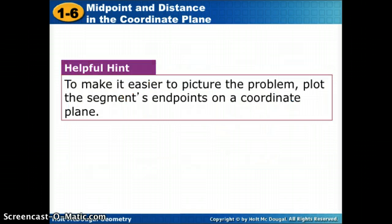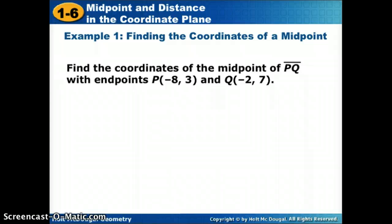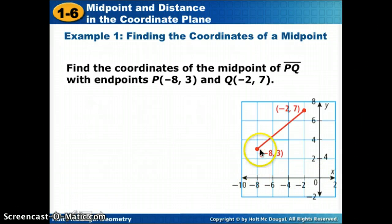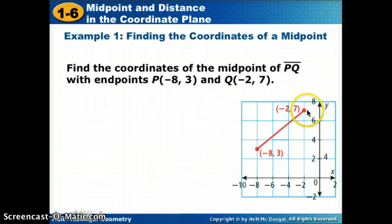It always helps to draw a picture. So if we're given points, the first thing we're going to do is plot those points. First example: find the coordinates of the midpoint of segment PQ. We'll go to a number line and plot P at negative 8, 3 — negative 8 goes to the left, up 3 — and Q at negative 2, 7.